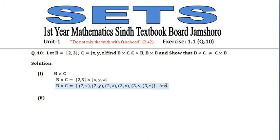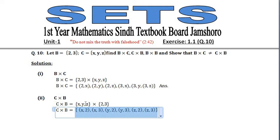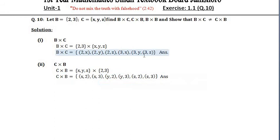Similarly, you can find C cross B. Here you can see that C cross B equals {(x,2), (x,3), (y,2), (y,3), (z,2), (z,3)}.